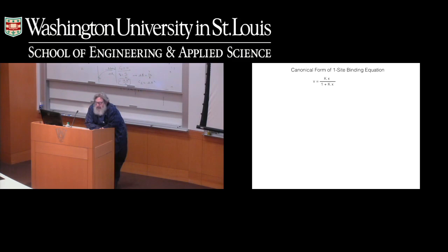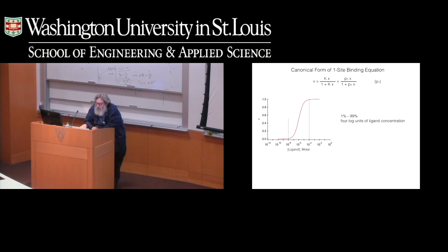This issue is called parameter identifiability, and it has been dealt with in machine learning and systems biology. A parameter is identifiable if a single set of parameters can uniquely fit the data. If other parameter sets can fit equally well, it's non-identifiable, which means you have very little information you can glean from that. We've looked at this by examining the canonical form of binding equations. A single binding site model can be reparameterized with a single P1, giving a single-site binding curve that goes from 1% to 99% occupancy in four log units.